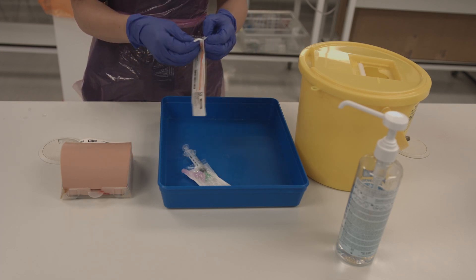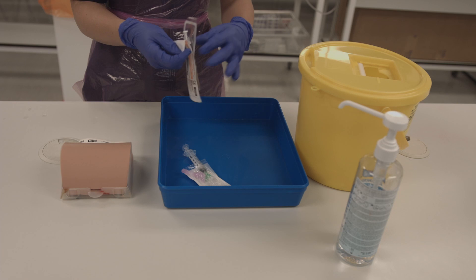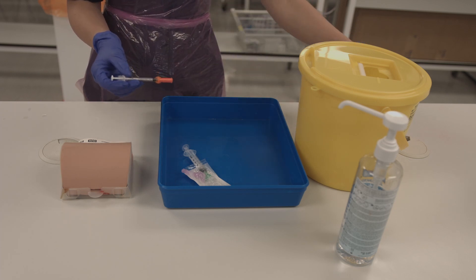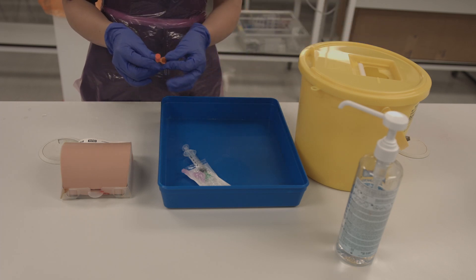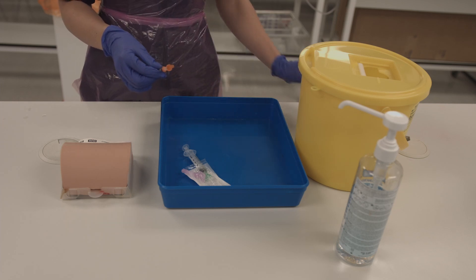Then, starting with the subcutaneous injection, you need to open the needle packet and fold back any needle safety mechanism that may be there. Remove the cap of the needle and put this to the side.